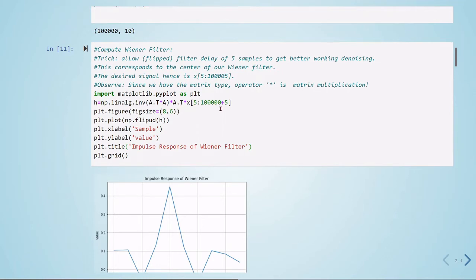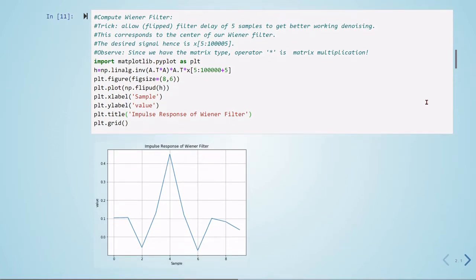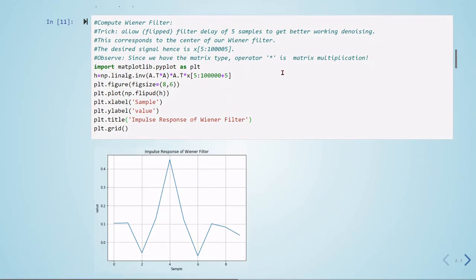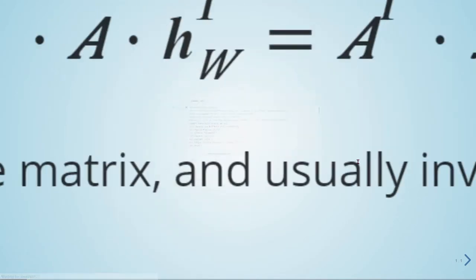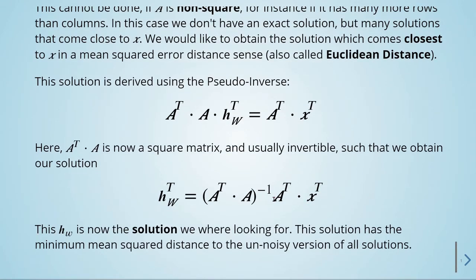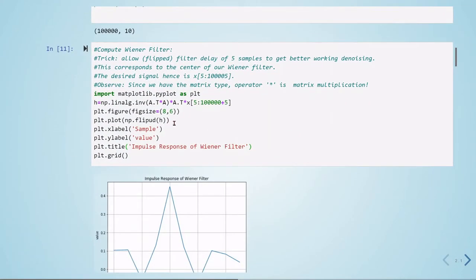Here we are computing the Wiener filter. The trick here is to allow a filter delay of 5 samples to get better working denoising. This corresponds to the center of our Wiener filter, so the desired signal is going from 5 to 100,005. Now our X and Y are matrices, and when we use this operator star, this is the matrix multiplication. So our H, now we are having here A transpose times A times A transpose times X. Like we have seen in these equations here.